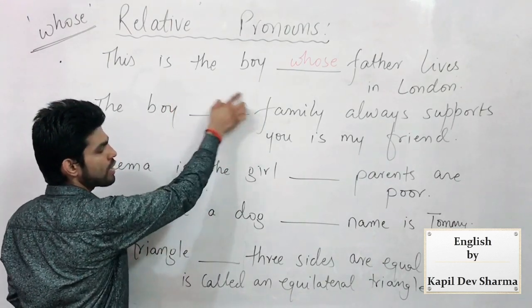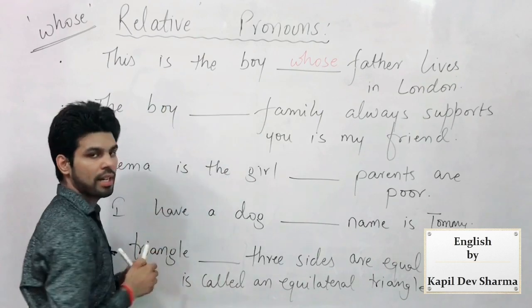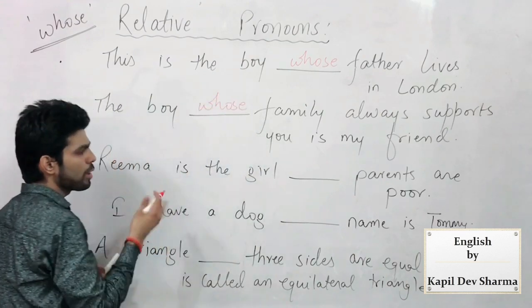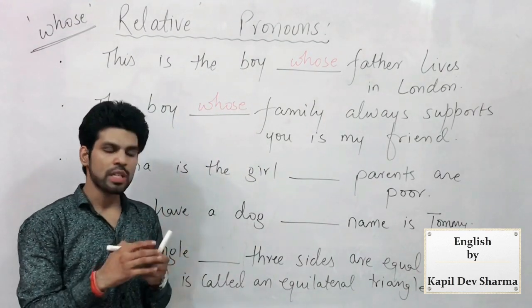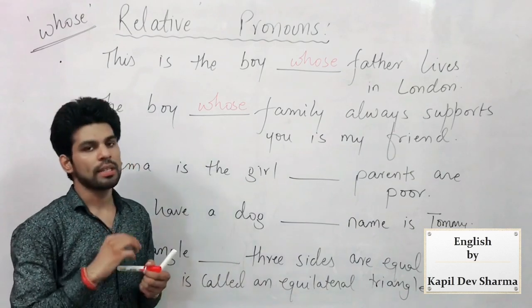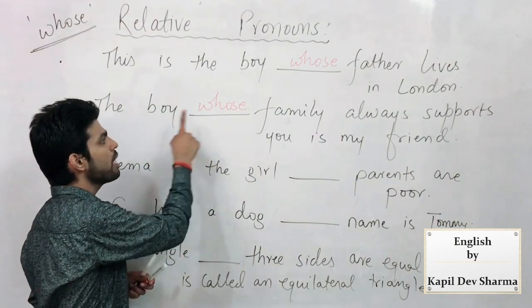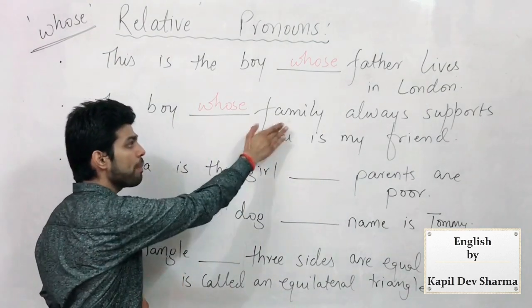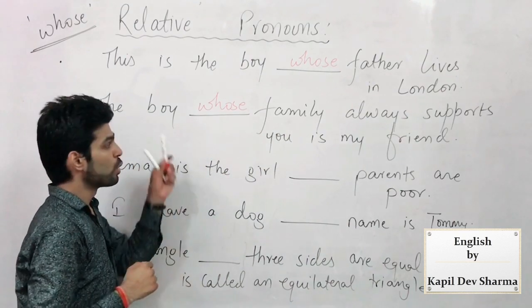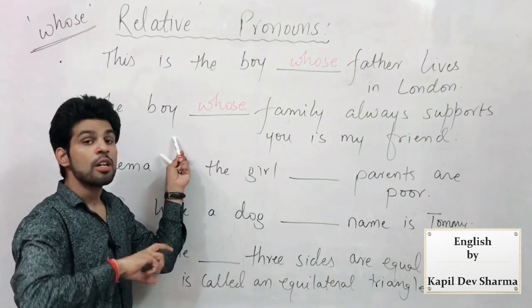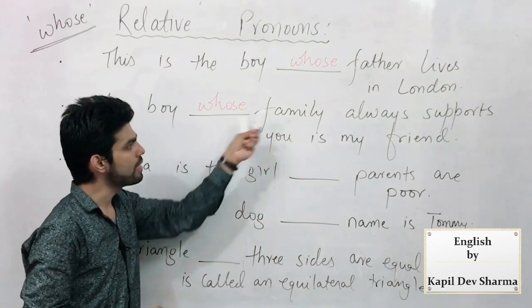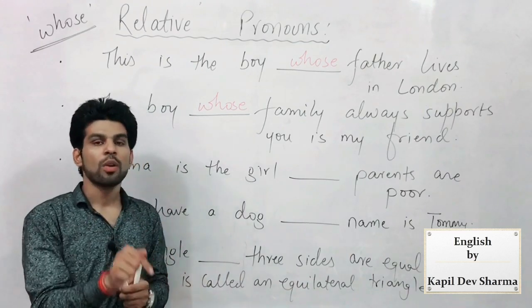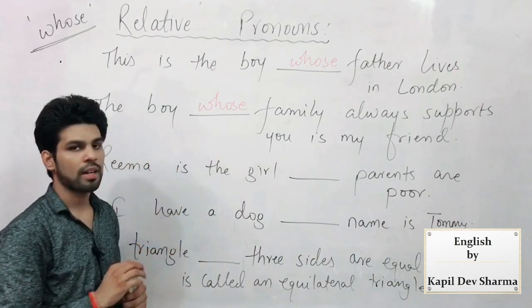'Voh ladka jiska parivaar' — the family of that boy is being discussed. Obviously you've shown his position, and where there is position, the answer is 'whose'. I've kept blank space — you can try who, whom, which, or any other word. In this case your answer will be: 'The boy whose family always supports you is my friend.' I repeat — it's not about the boy being subject or object, or choice — but yes, his right over something is stated: his family. To maintain his ownership, you must use 'whose.'